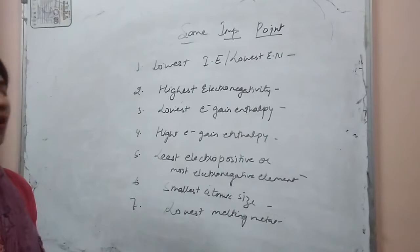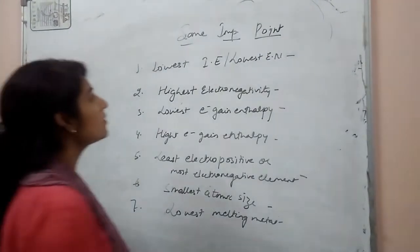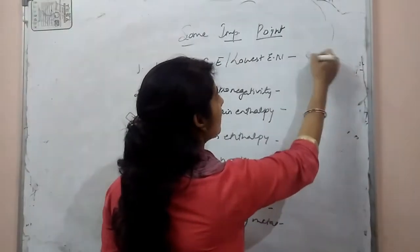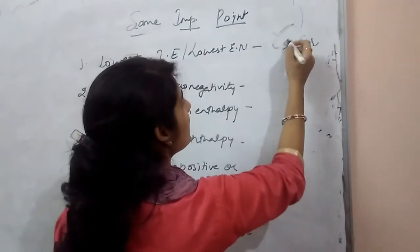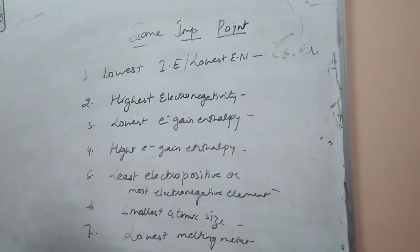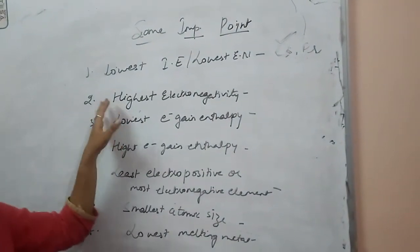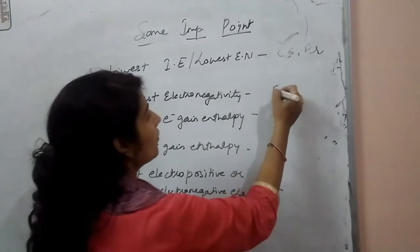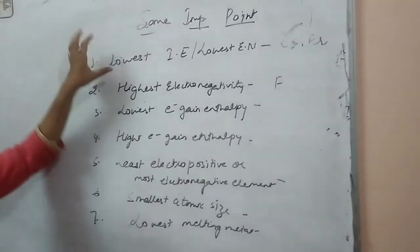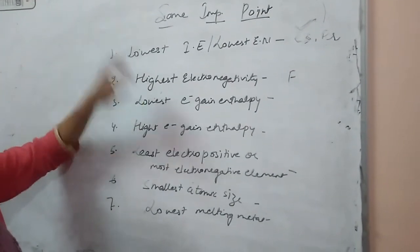Here first is lowest ionization enthalpy, or we can say lowest electronegative element, is caesium or francium. As we know francium is radioactive element, so generally we consider caesium as lowest ionization enthalpy element. Second is highest electronegative element is fluorine. Fluorine has highest electronegativity in the whole periodic table.